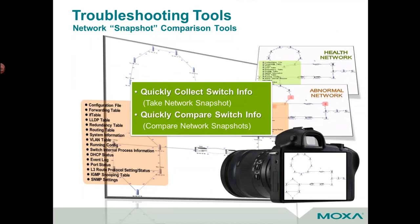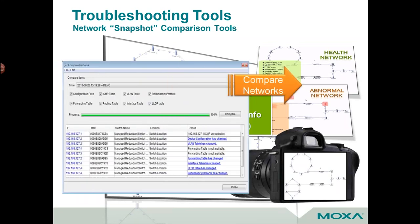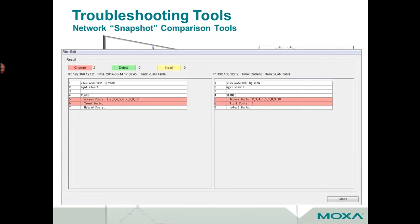One other nice feature of an NMS system is a network snapshot comparison tool. When you install and commission your network and everything is up and running properly, it's great practice to take a snapshot or picture of your network. If at some point your network fails or you begin to have errors, you can take an additional snapshot and have your NMS compare the two — it will actually show you the physical locations of the devices that have changed since your network was healthy. This will tell you the IP address, the MAC address, the name of the switch, the location, and what the change was. You can even compare two snapshots side by side and it will tell you what has changed amongst them.